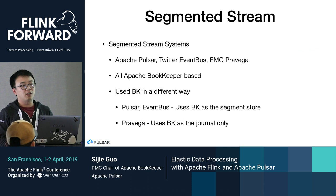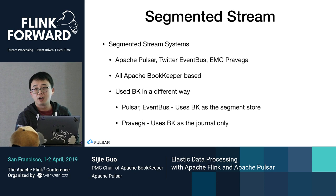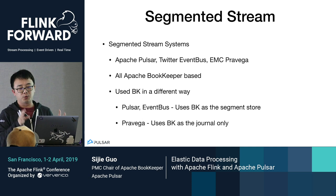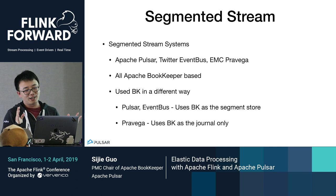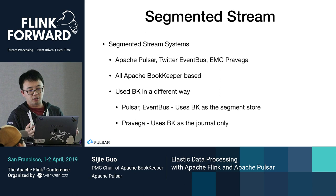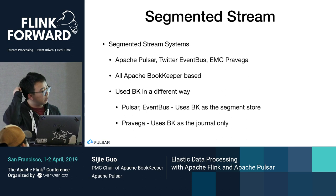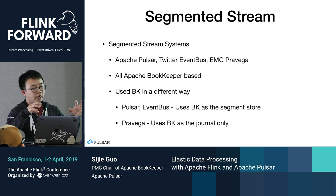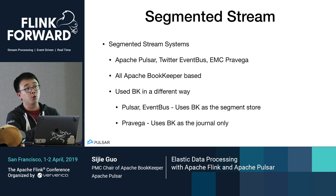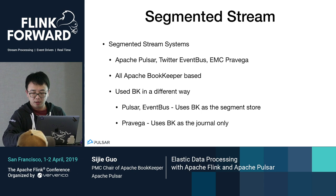You may have heard of other systems built on this concept. Twitter has an internal system called EventBus, and EMC has a system called Pravega — they're built using similar concepts, and interestingly, all are based on Apache BookKeeper. Pulsar and EventBus are very similar, using BookKeeper directly as the segment store. Pravega is a bit different — it uses BookKeeper as a giant journal but builds its own segment concept. They all share the same idea of segmented streams: you have the ability to stream data, but internally all data is segmented, giving you parallelism for batch processing.